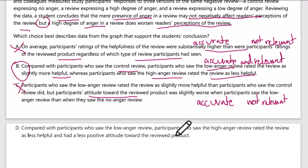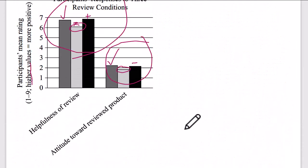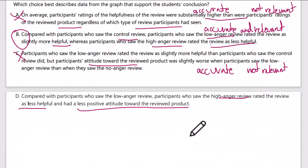Answer D: compared with participants who saw the low anger review, participants who saw the high anger review rated the review as less helpful and had a less positive attitude toward the reviewed product. That is accurate — high anger is negative compared to everything else for helpfulness. However, attitude toward the reviewed product is not relevant; it's not answering our question. D is therefore incorrect. The only answer choice that is both accurate and relevant is B.